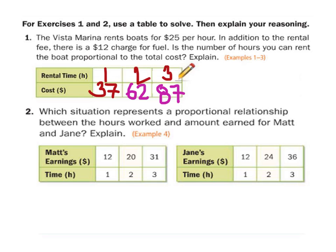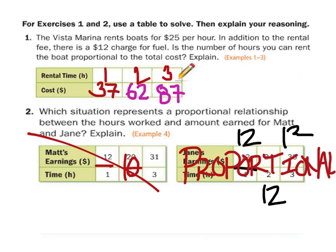Which situation represents a proportional relationship? Well, what's 12 divided by 1? 12. What's 20 divided by 2? 10. Is 12 equal to 10? No. No, this one's not proportional. Let's look and check the other one. What's 12 divided by 1? 12. 24 divided by 2? 12. 36 divided by 3? 12. Well, that one's proportional. And so we could write no on this one.